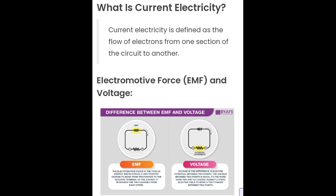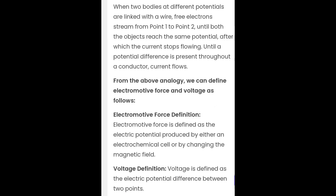Electromotive force, EMF, and voltage. Here's the diagram. When two bodies at different potentials are linked with a wire, free electrons stream from point one to point two until both the objects reach the same potential, after which the current stops flowing. Until a potential difference is present throughout a conductor, current flows.